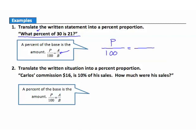Now we just need to get the amount and the base in the right spots. The key is the phrase: a percent of the base is the amount — we're always taking a percent of the base. Going back to our written statement, it says 'what percent of 30,' so 30 is our base, and that goes in the bottom. That leaves 21 as our amount. So we get the percent proportion: p over 100 equals 21 over 30.